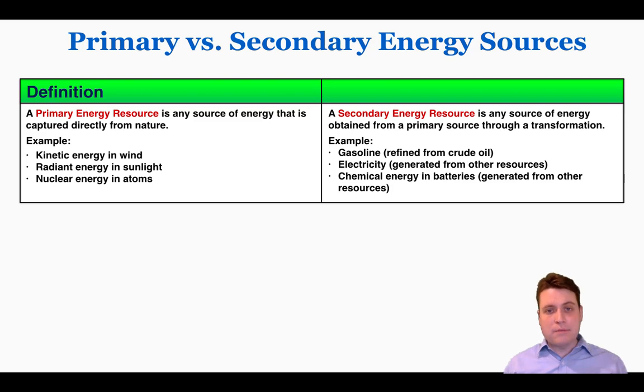Radiant energy in sunlight is captured by solar panels, so the radiant energy itself is coming directly from nature without any human interference. Nuclear energy in atoms already exists there; it hasn't been tampered with or created by people at all. So those are all primary energy resources.